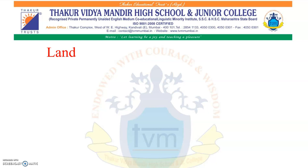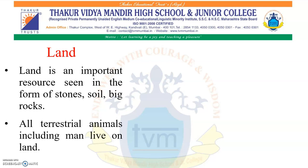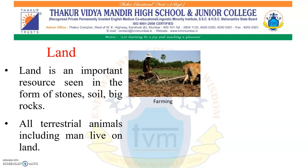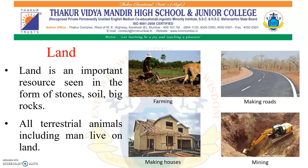Now let us start with land. Land is an important resource seen in the form of stone, soil, big rocks, etc. All terrestrial animals including man live on land. We make use of plants and animals in the forest that grow on land. The minerals, crude oil and natural gas obtained from the earth are very important for us. Land is also used for farming, making roads, making houses, mining, etc.